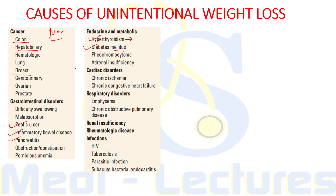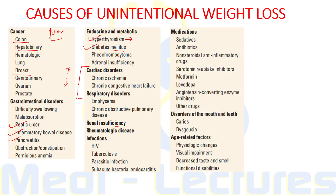In cardiac and respiratory disorders, there is increased metabolic demand and decreased caloric intake which is responsible for weight loss. Renal insufficiency due to uremia causes decreased appetite. Rheumatological diseases and infections are chronic inflammatory states leading to weight loss. Several medications like sedatives, antibiotics, anti-psychiatric drugs like SSRIs, NSAIDs, metformin, and levodopa can all lead to significant weight loss by various mechanisms.